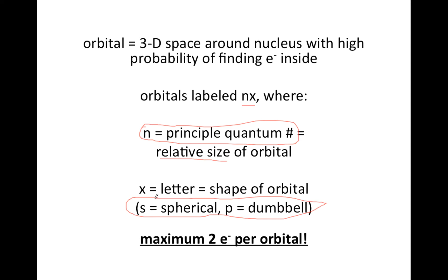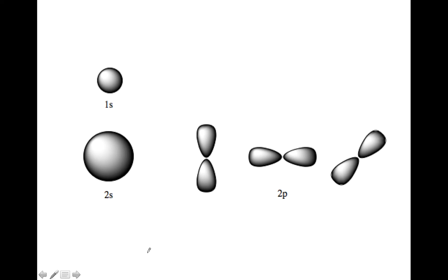And remember, I'll emphasize this again later, but maximum two electrons can fit in each orbital. So here's a visual of what some of these orbitals look like. Imagine the nucleus is at the dead center of each of these orbitals.